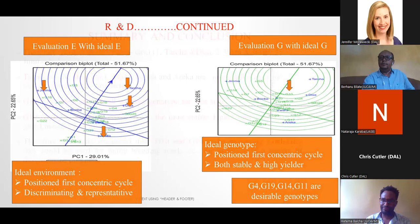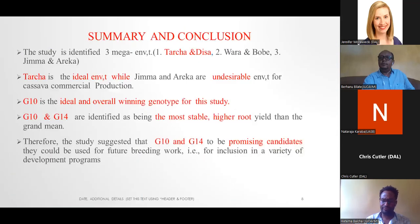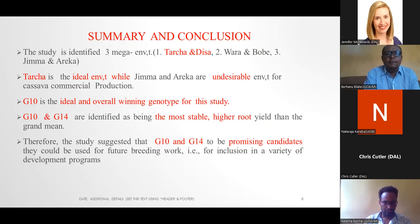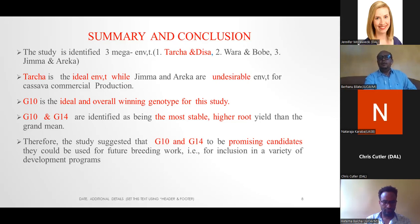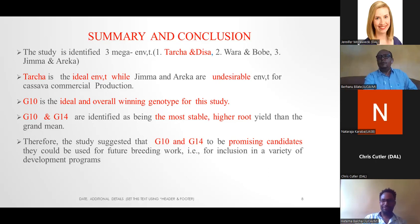In summary, the study identified one mega-environment where Wondo and Bombay form a second mega-environment. Tutcho is the ideal environment while Jimma and Areka are undesirable environments for cassava commercial production. Genotype 10 is the ideal and overall winning genotype for this study. Genotype 10 and genotype 14 are identified as the most stable and high root-yielding genotypes above the grand mean, and the study suggests these as promising candidates for inclusion in a variety development program.